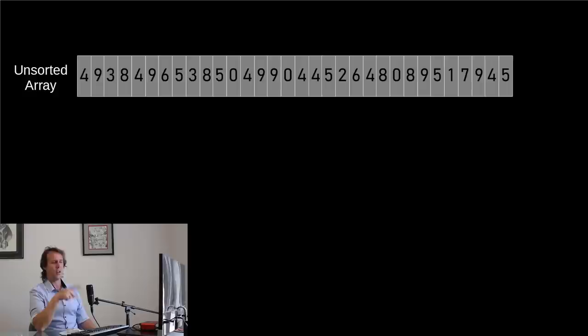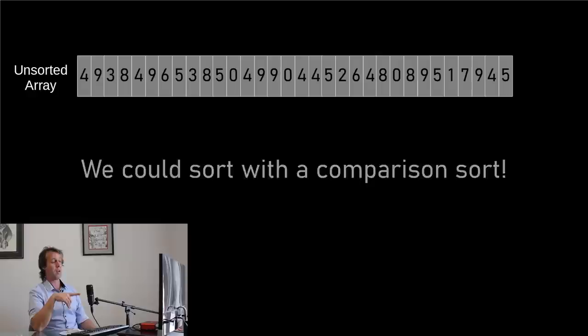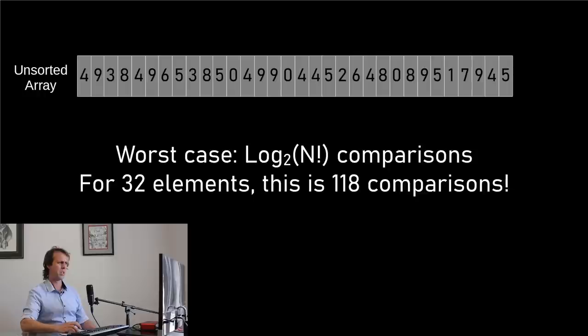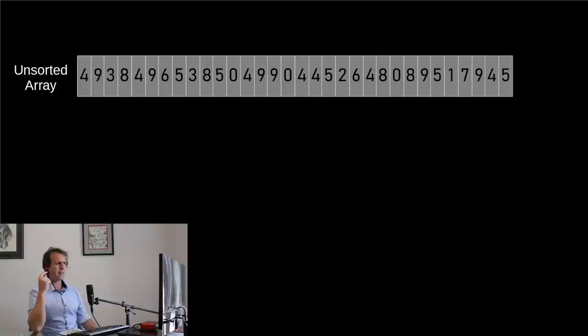So we could, if we wanted to, use a comparison sort. In the worst possible case, we'd be looking at something like the logarithm base two of 32 factorial, which comes out to be about 118 comparisons in the worst case. But looking at that list, surely comparison sorts are an overkill. The data looks pretty simple — it's just the digits from zero to nine. So let's do something else.